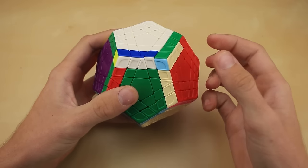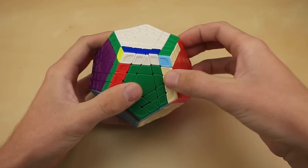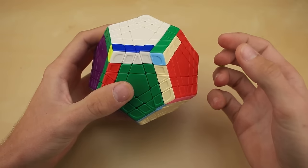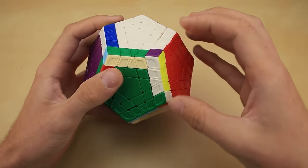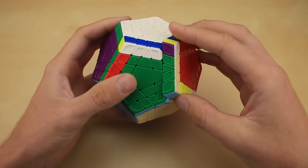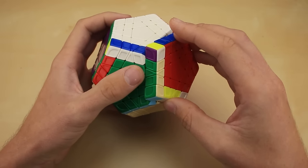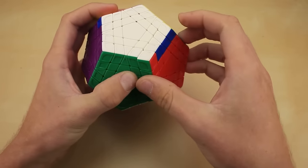You might say, big deal, just don't touch the inner layers if you don't want to move them. But that's a lot easier said than done when the layers are as tiny as they are on the Gigaminx. I find myself having to adjust my turning style and stick my thumb right here just to prevent those inner layers from moving.